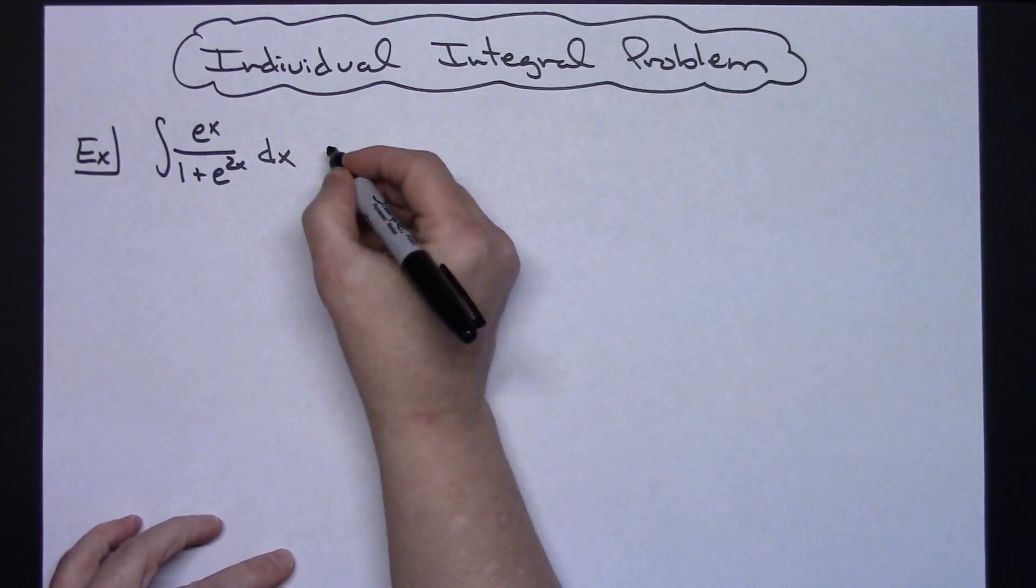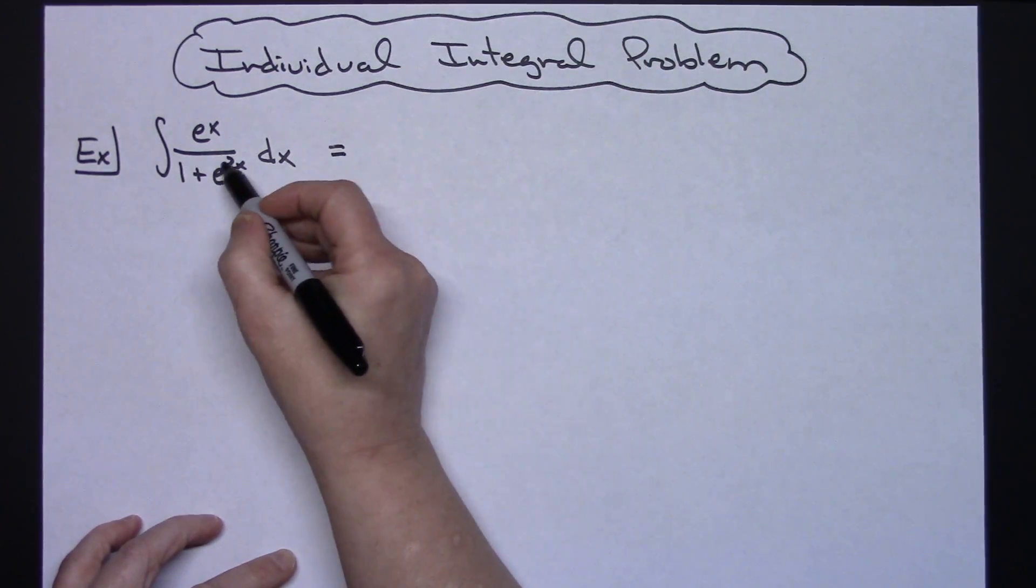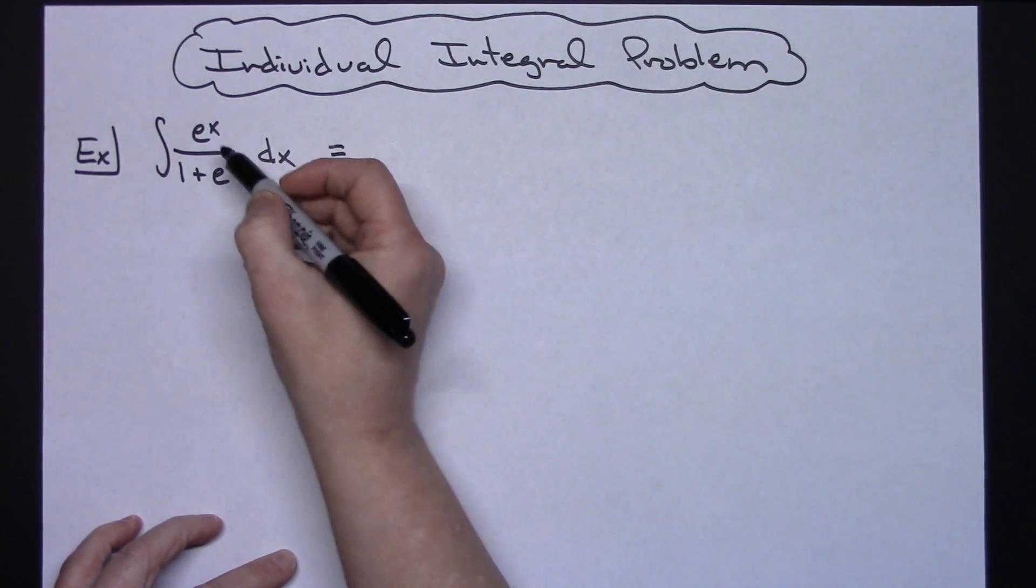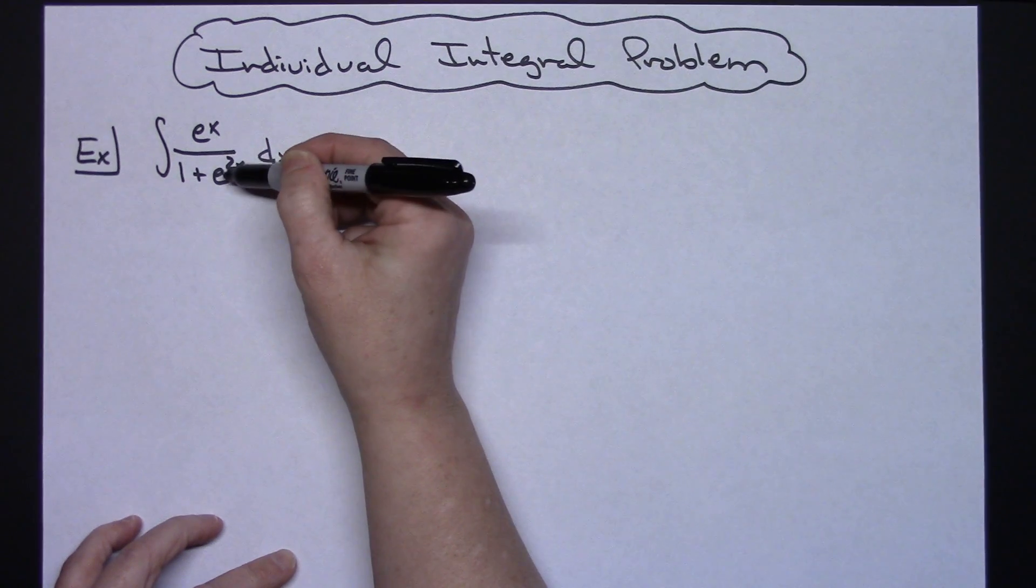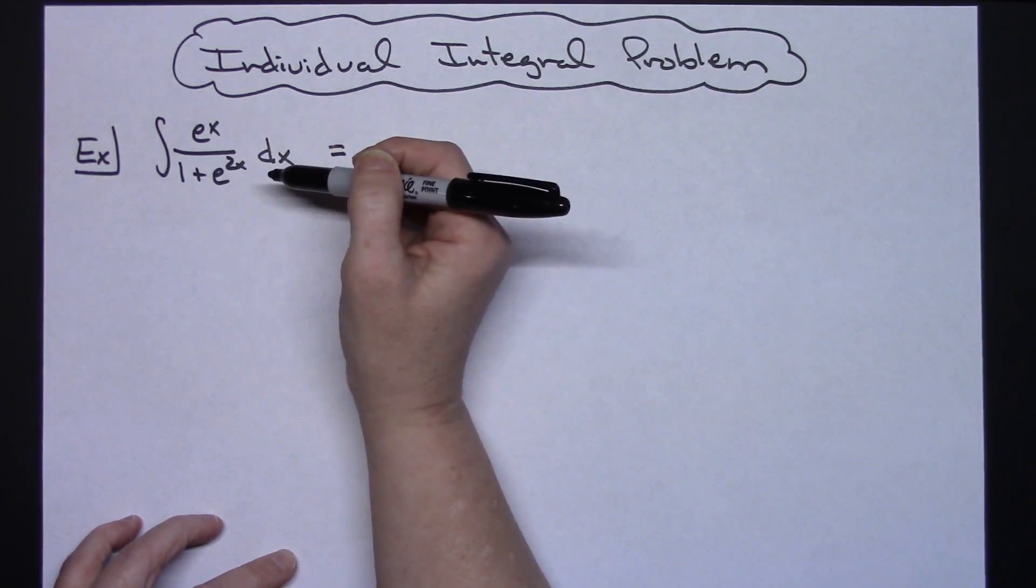So the first thing in this scenario that might be the best approach is you see you've got e to the 2x and you've got an e to the x. Those two things are really close to being the same thing.